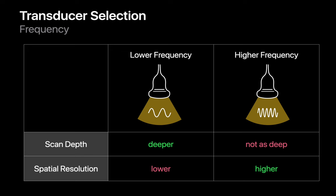Another factor in transducer selection is the frequency of the ultrasound waves emitted by the transducer, which entails a trade-off. Higher frequency ultrasound waves create higher resolution images, but lower frequency ultrasound waves can travel further and permit a greater scan depth. Other factors can also influence penetration depth, such as tissue type — imaging through fat tends to reduce penetration, while imaging through fluid may increase our ability to see deep into the patient.